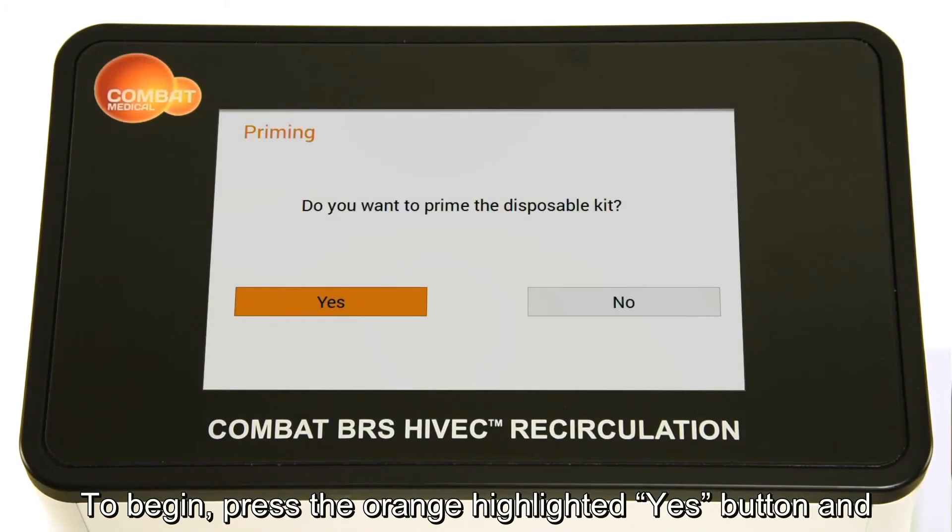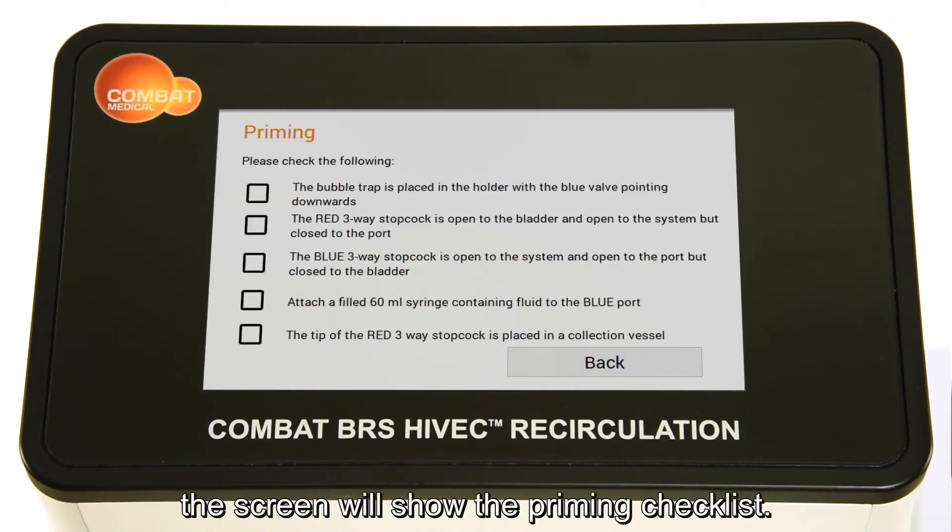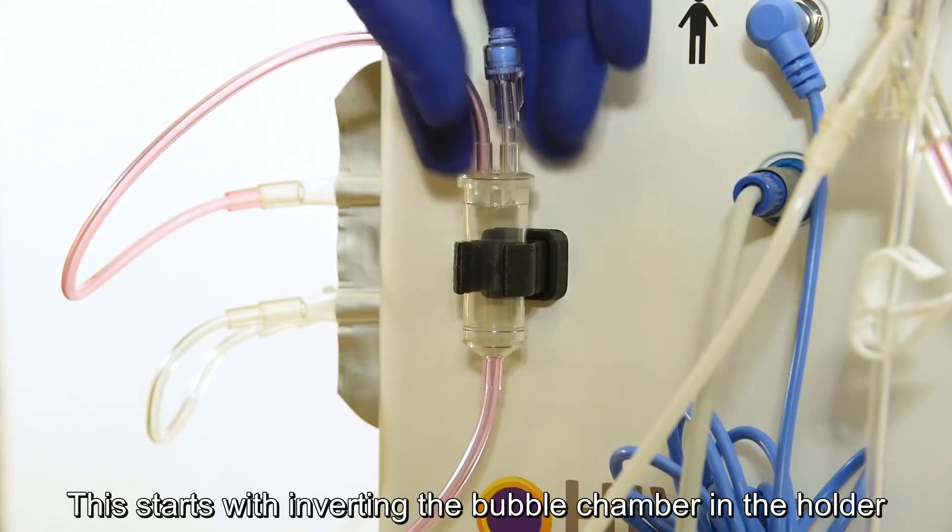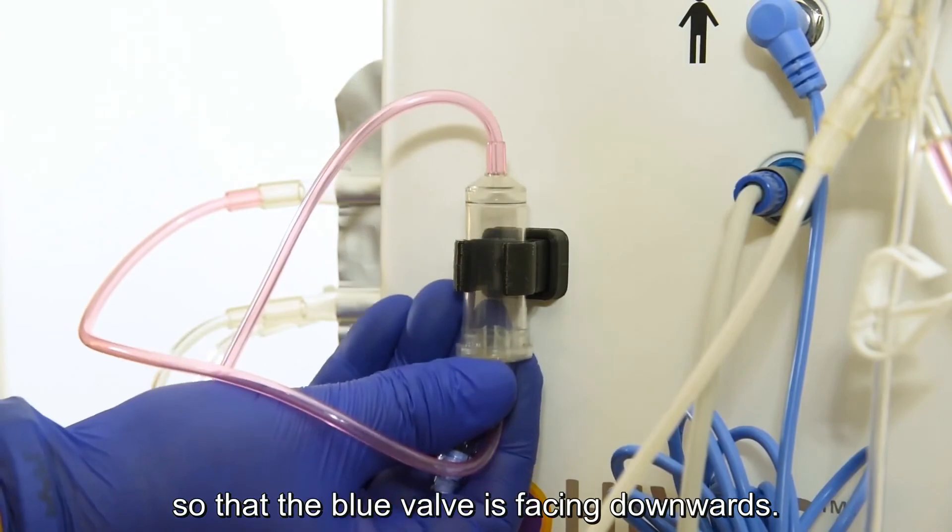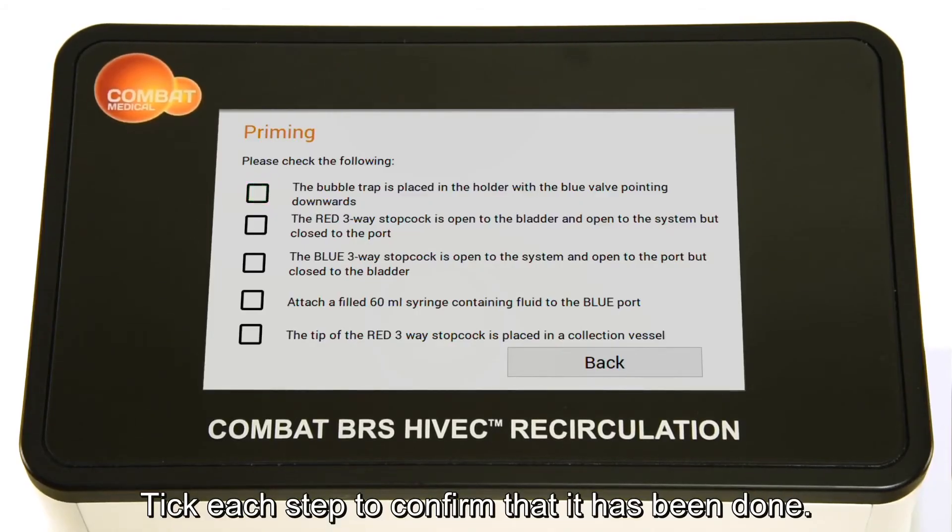To begin, press the orange highlighted Yes button and the screen will show the priming checklist. This starts with inverting the bubble chamber in the holder so that the blue valve is facing downwards. Tick each step to confirm that it has been done.